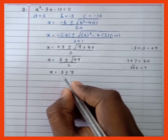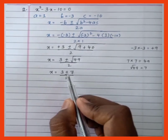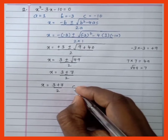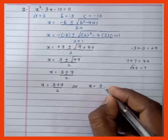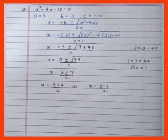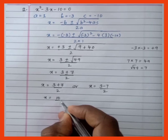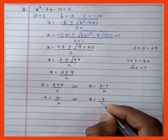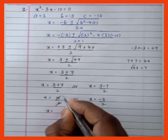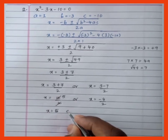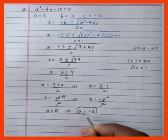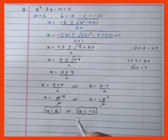So x = (3 ± 7) / 2. Take the plus value: x = (3 + 7) / 2 = 10 / 2 = 5. Take the minus value: x = (3 - 7) / 2 = -4 / 2 = -2. Therefore the solutions are x = 5 and x = -2 for the quadratic equation x² - 3x - 10 = 0.